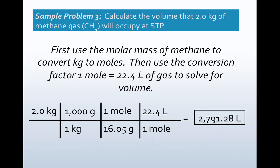Next problem: calculate the volume that 2 grams of methane gas will occupy at STP. So again, STP—a bell should ring in your head—I can use that molar volume. This is basically a normal mole problem. So I'm starting with 2 kilograms of methane. I change that to grams here. Then I change it to moles of methane using the molar mass, and then the 22.4 liters equals 1 mole to get 2,791 liters.